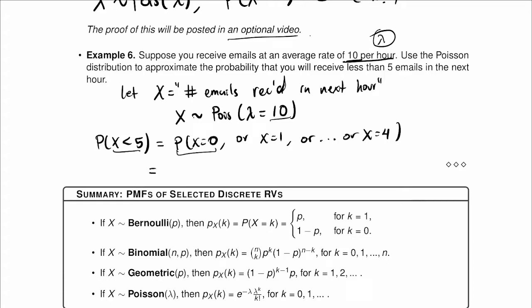So we have to calculate each probability. For example, for x equal to 0, it's going to be e to the minus 10 times 10 to the 0 over 0 factorial and so on. So the last probability is exponential of minus 10 times 10 to the 4 over 4 factorial.